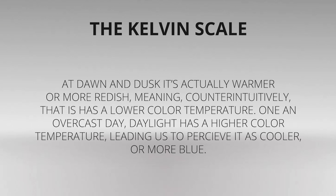At dawn and dusk, light is actually warmer or more reddish, meaning counterintuitively that it has a lower color temperature. On an overcast day, daylight has a higher color temperature, leading us to perceive it as cooler or more blue.